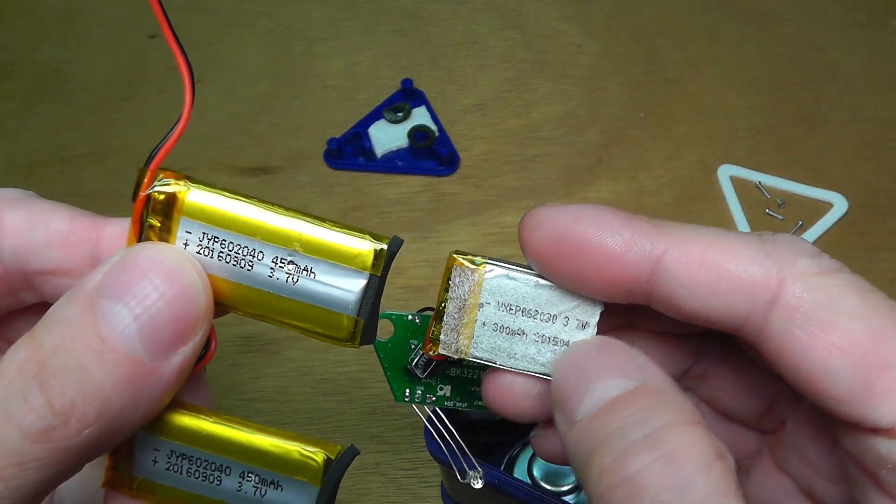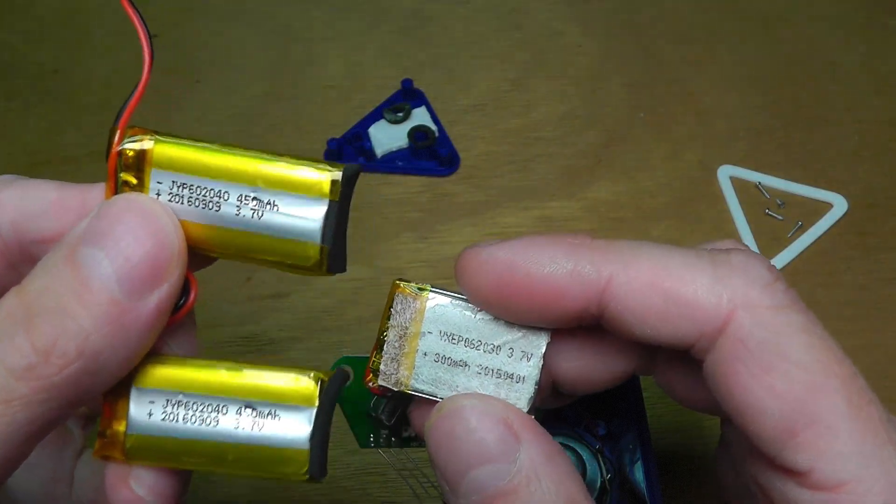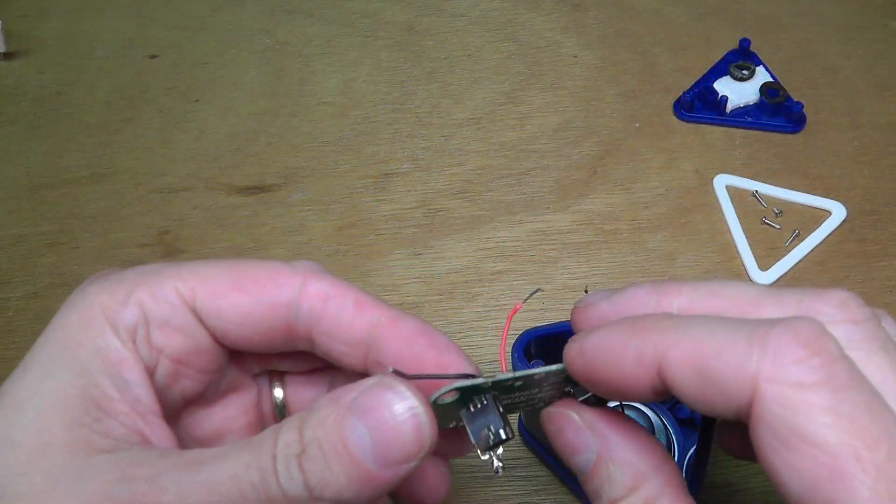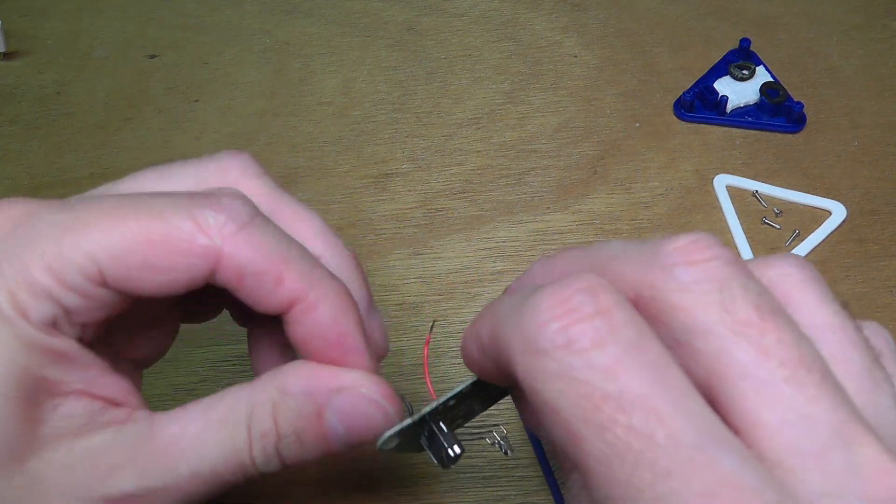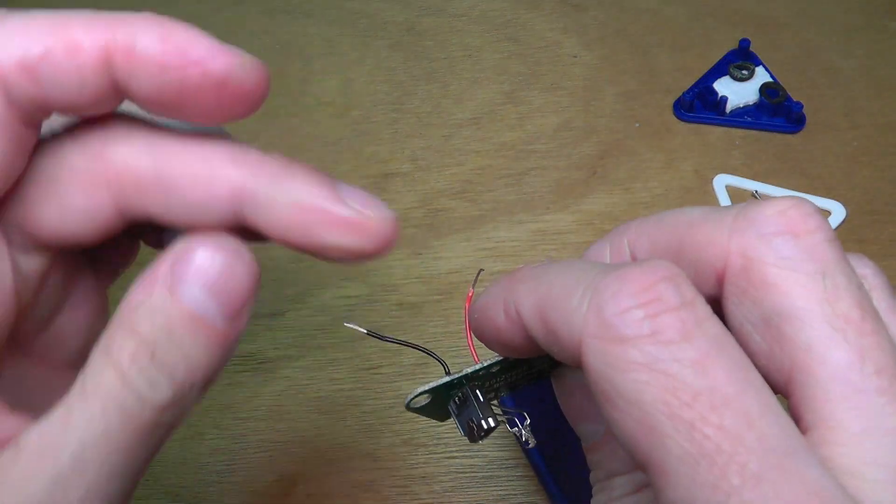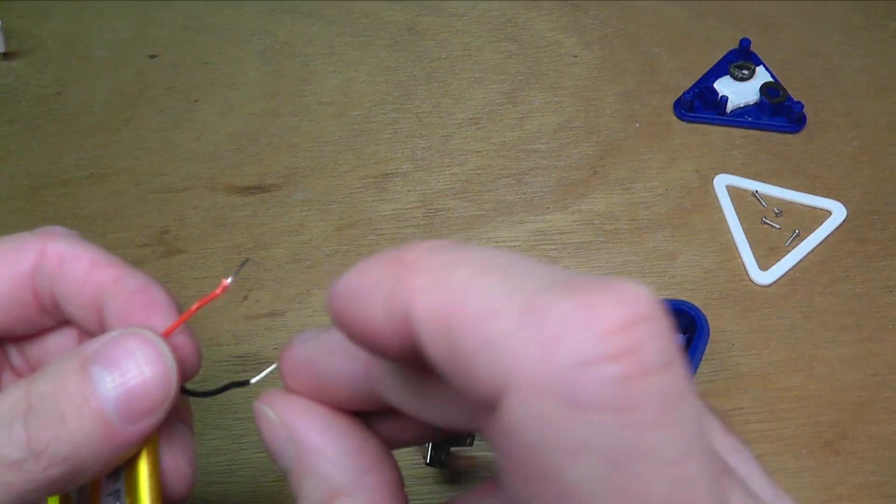So next I'm going to detach the original battery here from this board, and I'm going to remove some of the insulation on the wires, just like you see here. I do that with all the batteries.